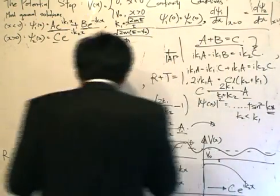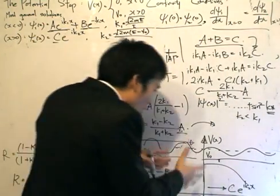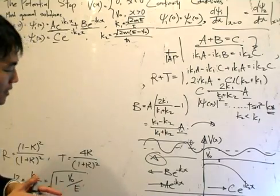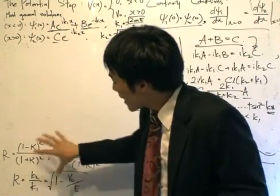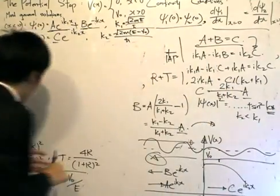So now we are ready to use these equations to explain what is this funny behavior that happens at the potential step. All our work results in these bunch of equations, and now we can use that to investigate the potential step.